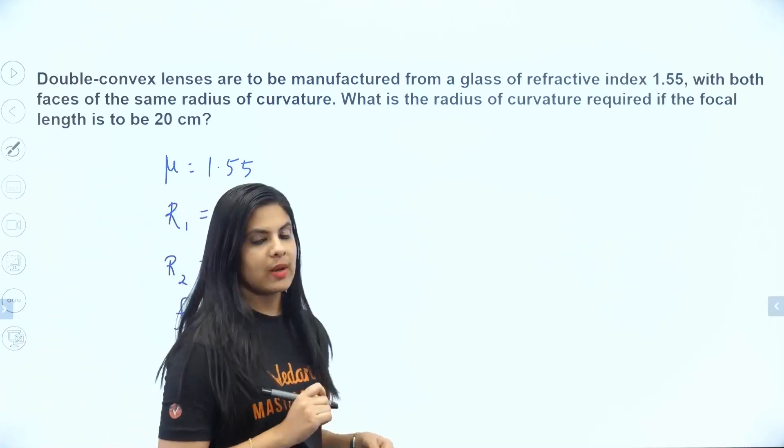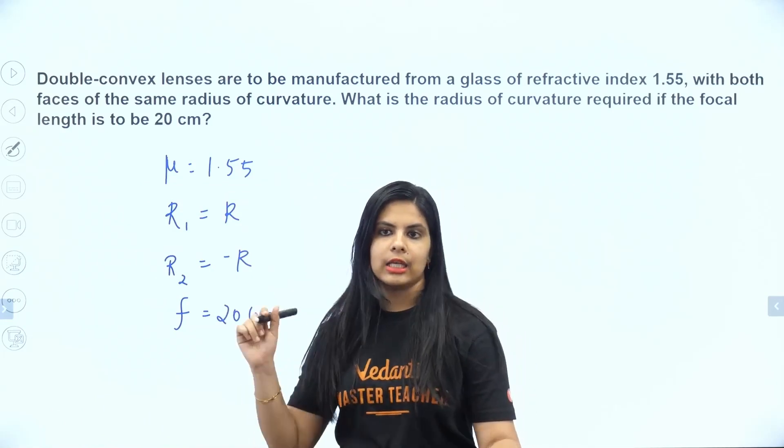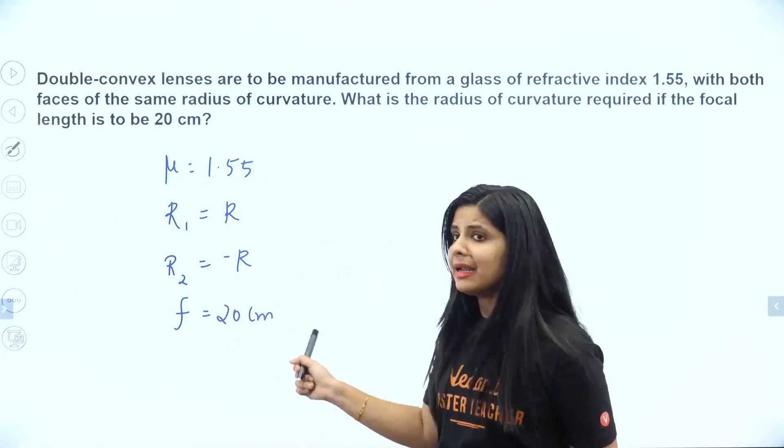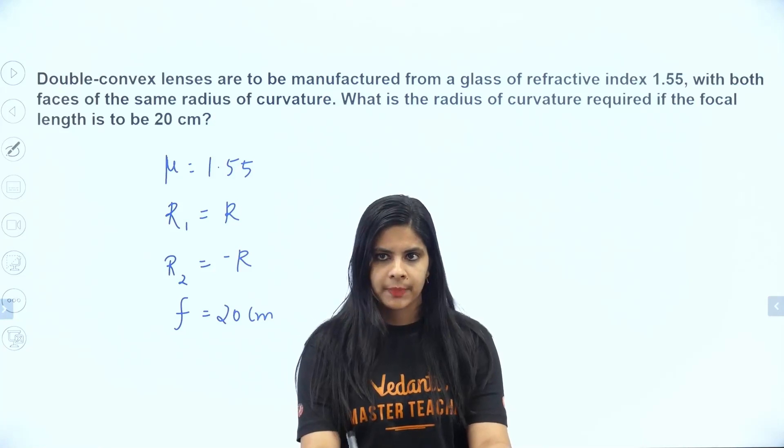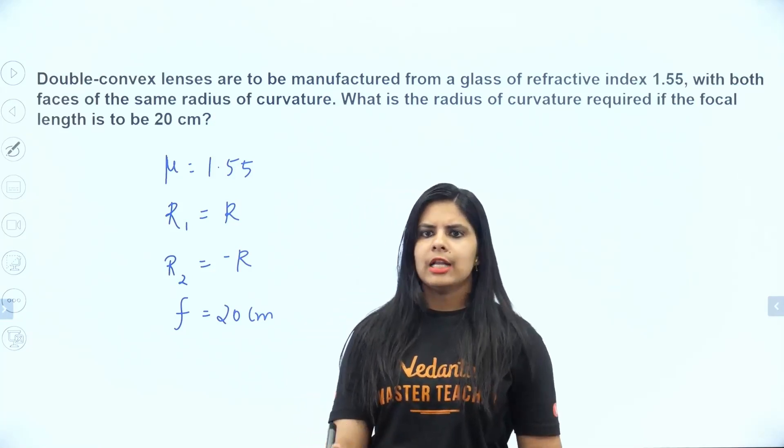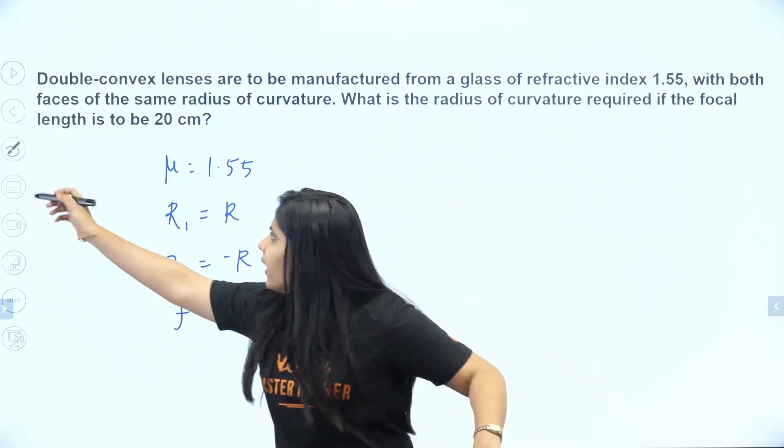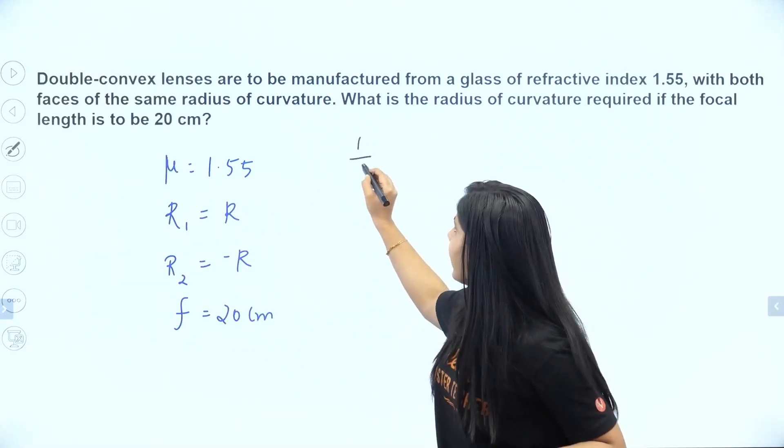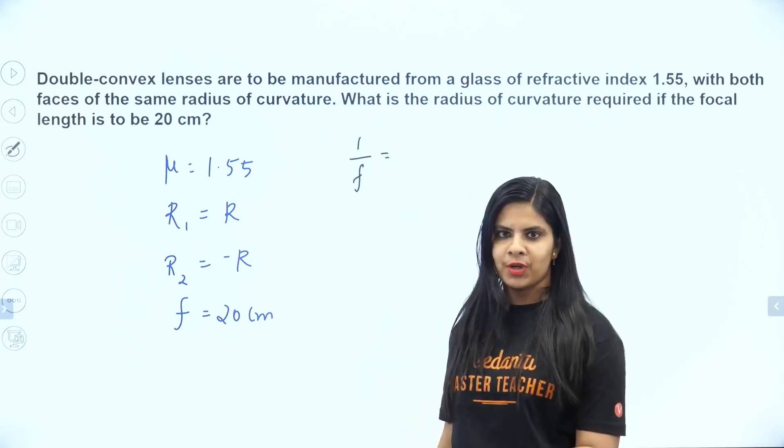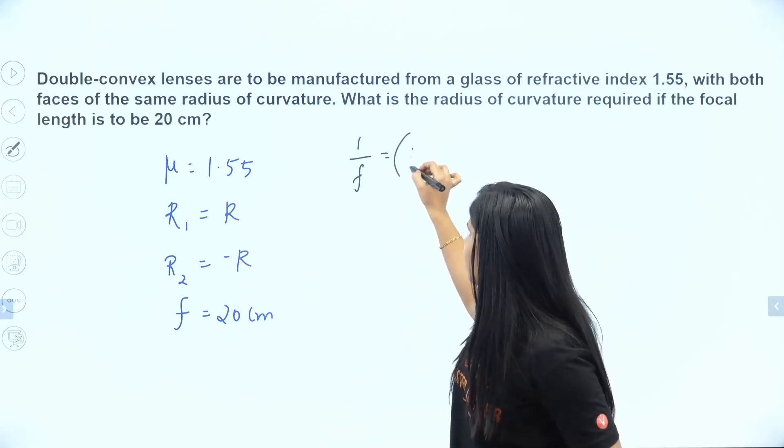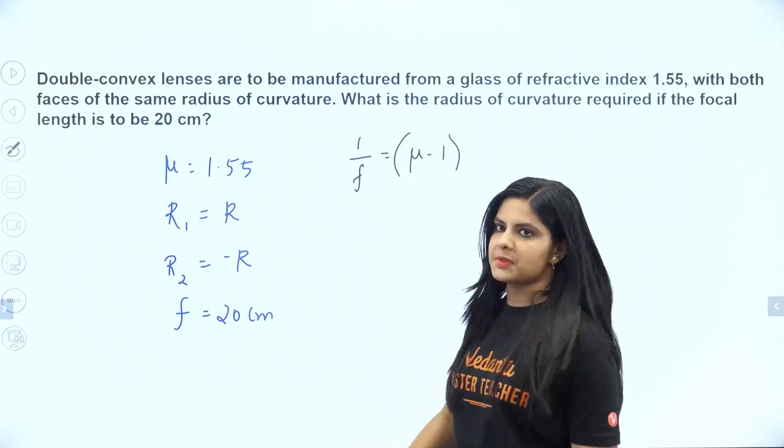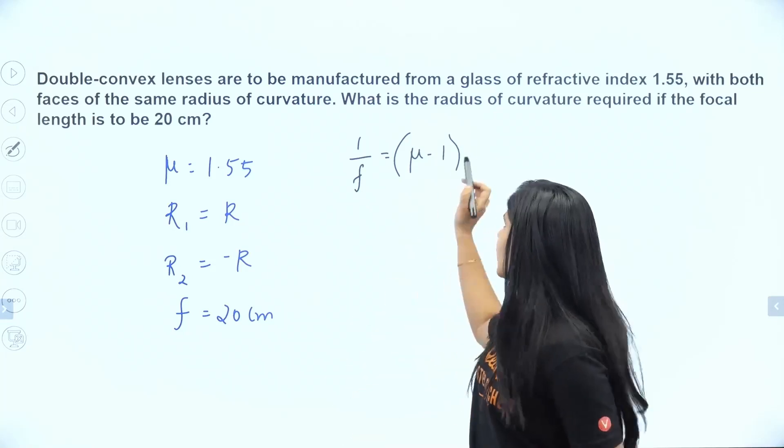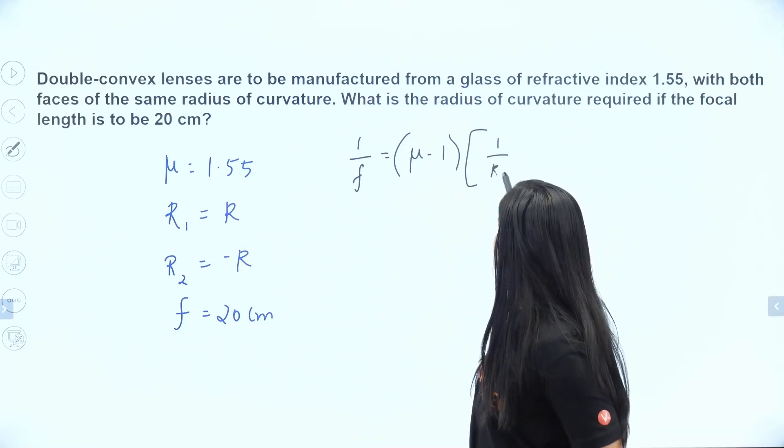The focal length is 20 cm, so we can find the value of R using the equation: 1/F = (μ-1)(1/R1 - 1/R2).